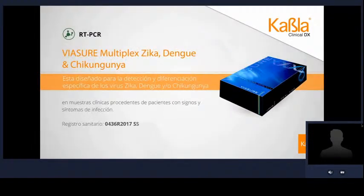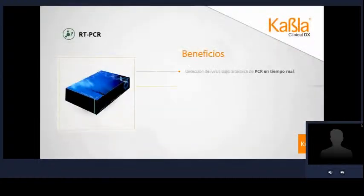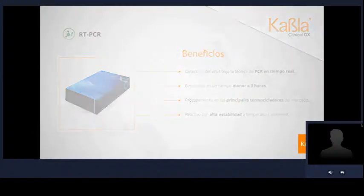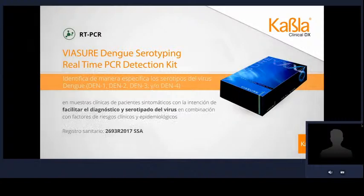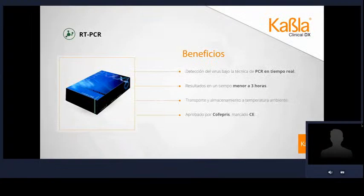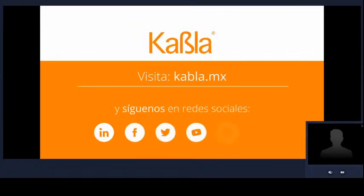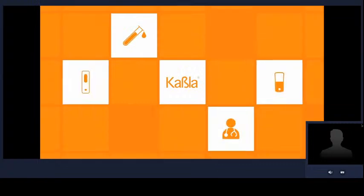En KABLA contamos con pruebas para el diagnóstico de dengue, como la prueba Biashur Zika, Dengue y Chikungunya Real-Time PCR Detection Kit, para la detección y diferenciación de los virus del zika, dengue y chikungunya por PCR en tiempo real. También tenemos a disposición la prueba Biashur Dengue Serotyping Real-Time PCR Detection Kit, diseñada para el diagnóstico e identificación del serotipo de virus del dengue en formato de PCR en tiempo real. KABLA: Soluciones para un diagnóstico oportuno.